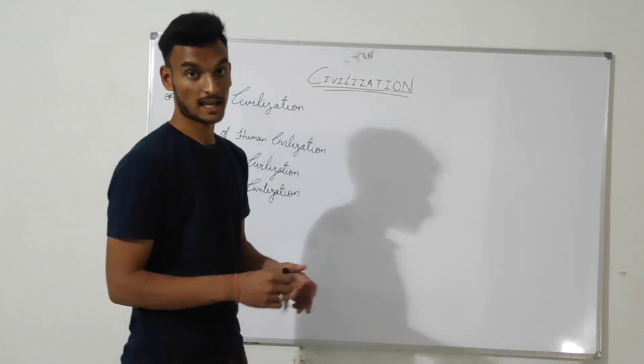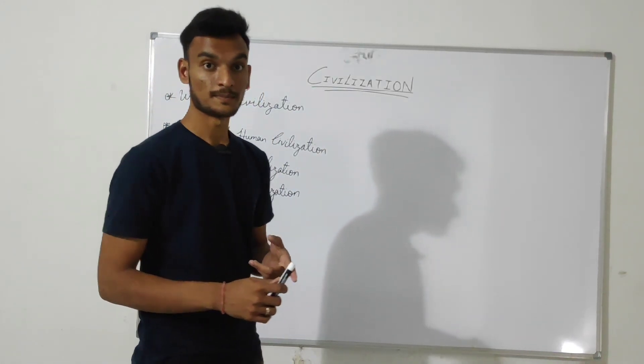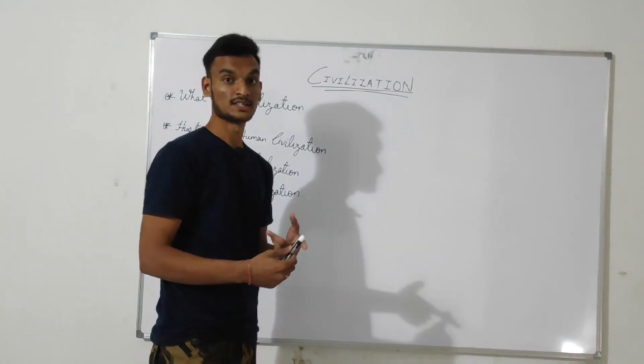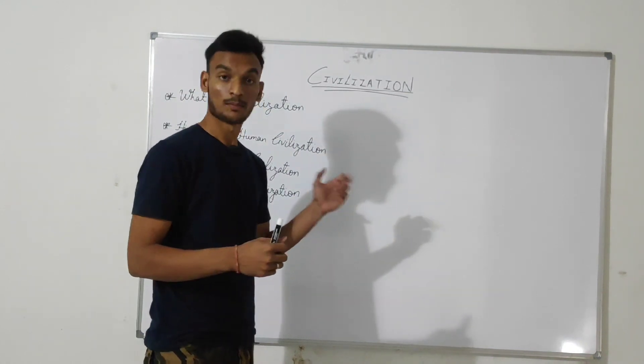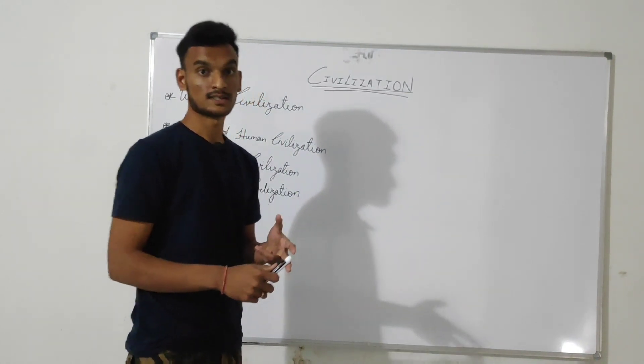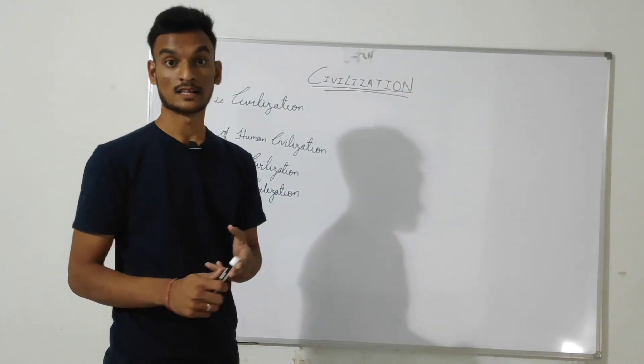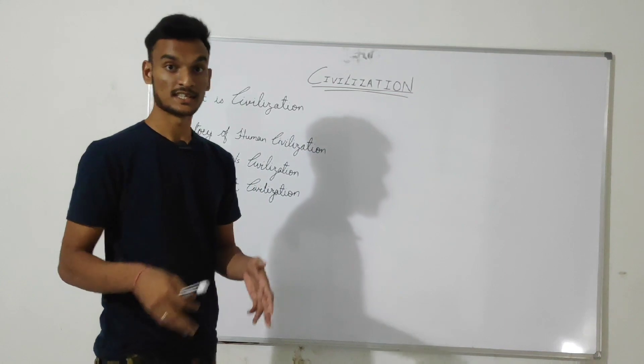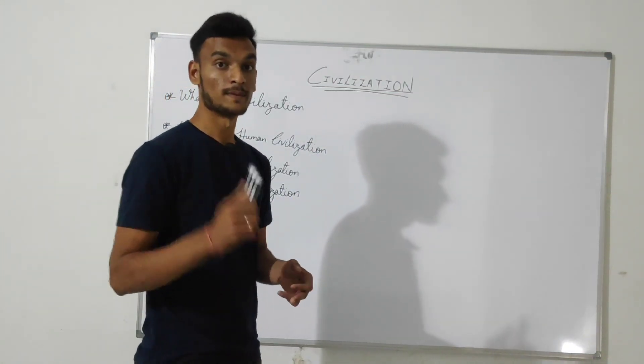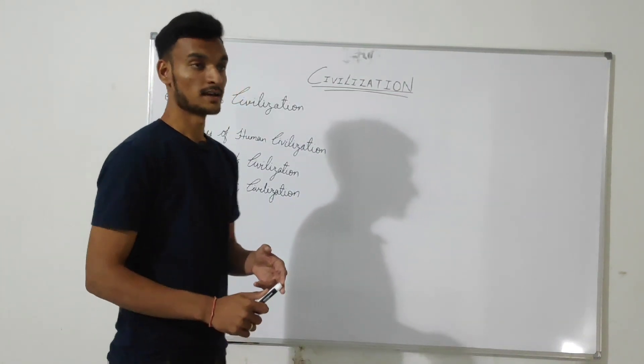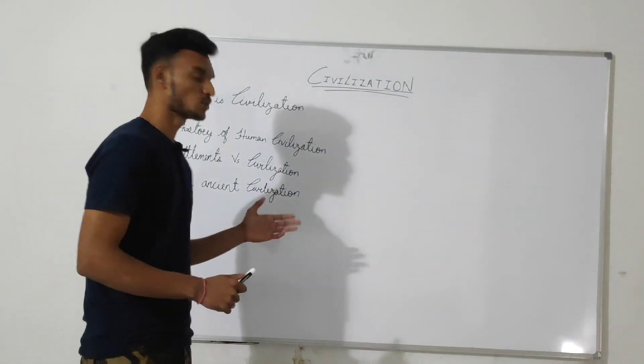So these characteristics can be dense urban population, dependence on agriculture for feeding the populace, systematic hierarchical society as we see nowadays, monumental buildings and so on.